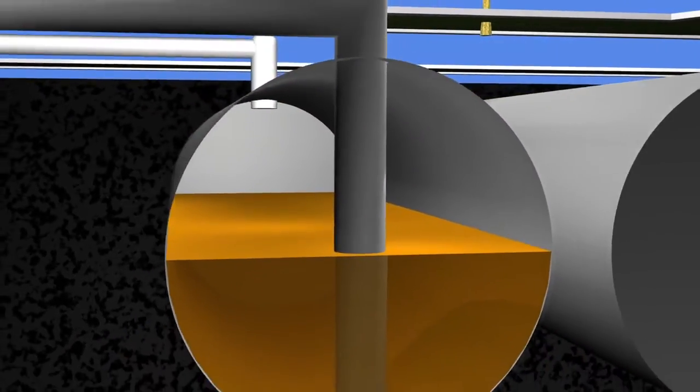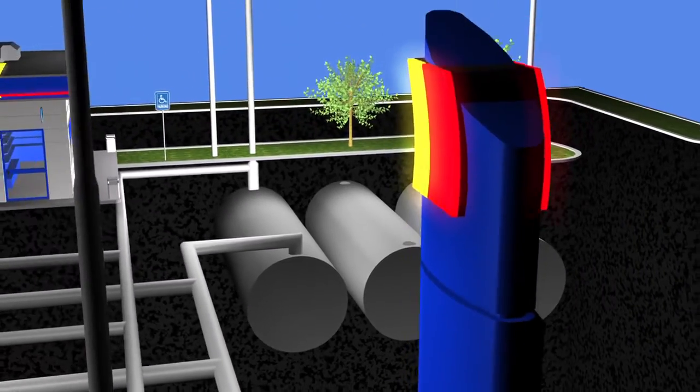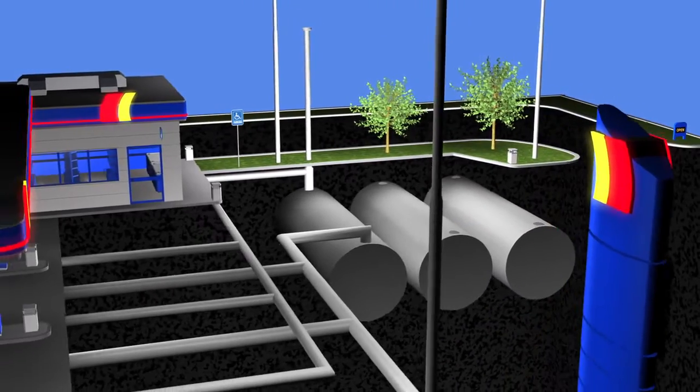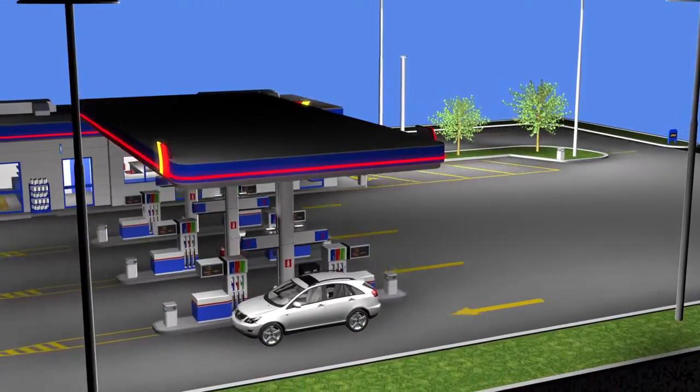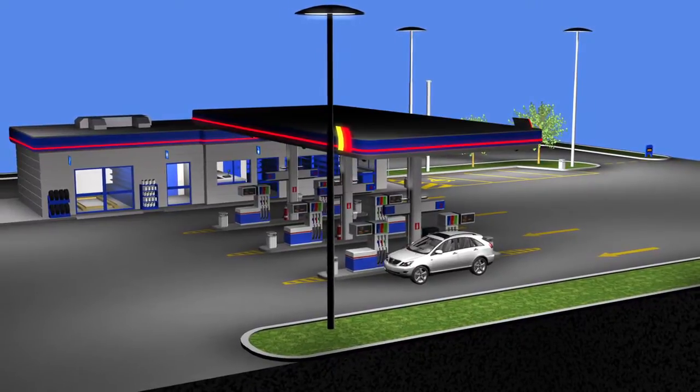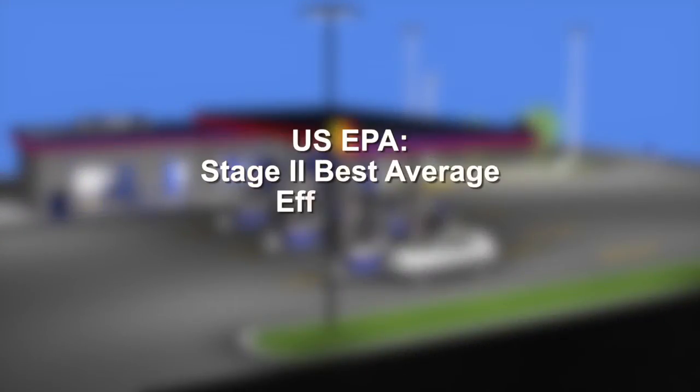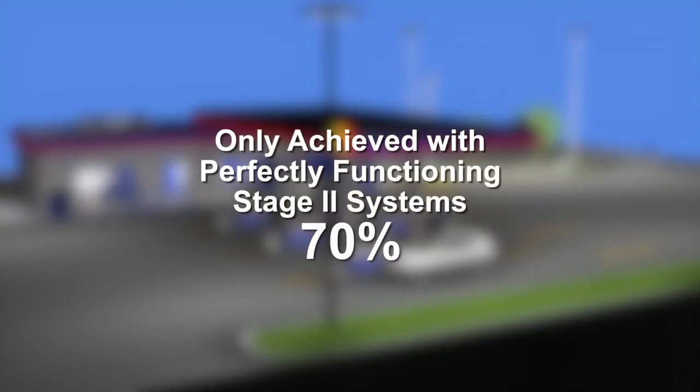These variables also make it extremely challenging to test in-use Stage 2 efficiencies at a GDF. Conditions can change daily, or even with every vehicle. And it is this lack of in-use testing that has led to the general acceptance of the certification values. Values measured under conditions that will, most likely, never occur naturally. In fact, in real-world applications, the US EPA estimates the best average efficiency a Stage 2 system can achieve is 70%. And this percentage can only be achieved if every GDF has a fully functioning and properly maintained Stage 2 system installed.